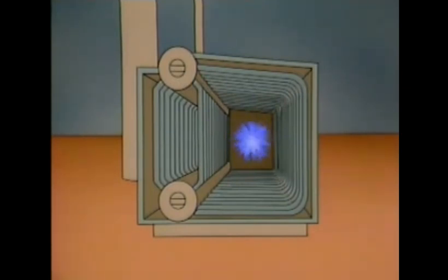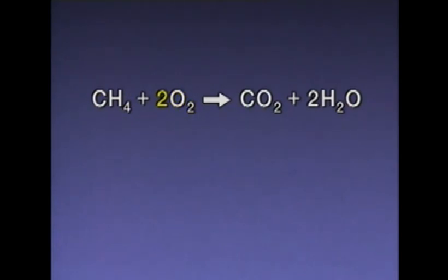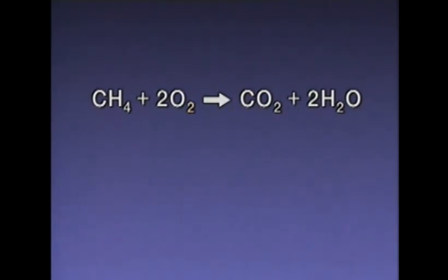The fuel in our example is natural gas. Natural gas is mostly methane, which is a compound of carbon and hydrogen. This is the chemical equation that describes what's going on in our example. Methane is represented by the symbol CH4, meaning a methane molecule consists of one carbon atom and four hydrogen atoms. During this reaction, one molecule of methane reacts with two molecules of oxygen. The number two to the left of the symbol for oxygen tells us that two oxygen molecules are needed. The two to the right of the symbol indicates that each molecule consists of two atoms. When no number is shown, the number one is assumed.